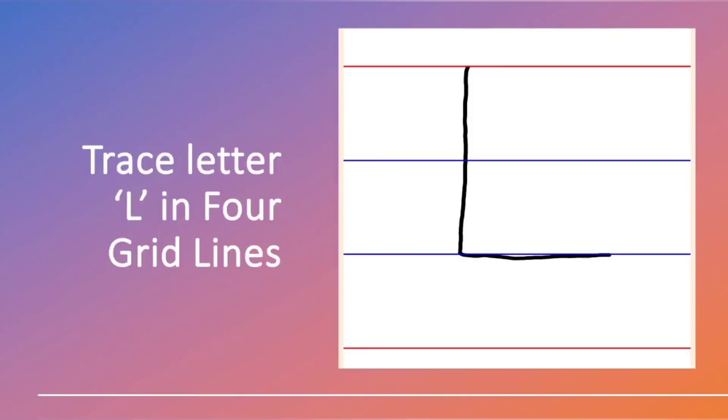We will check the letter L. This is capital letter L. The first three lines are standing lines, and the third line is sleeping line. This is capital letter L. Standing line, sleeping line. Capital letter L, 4 grid lines. Choose okay.